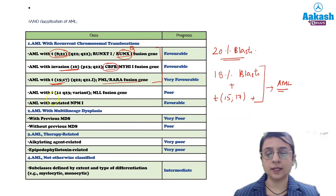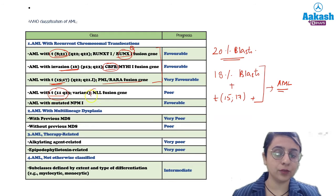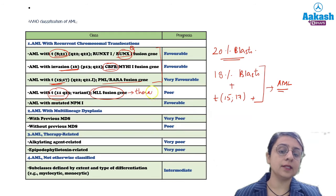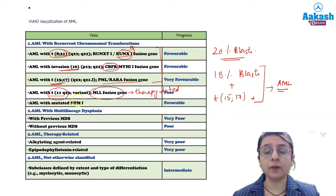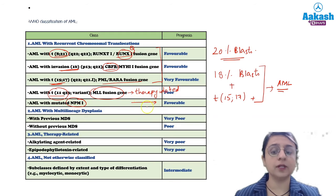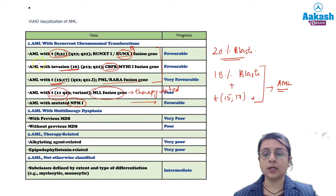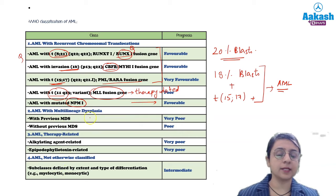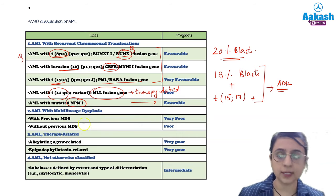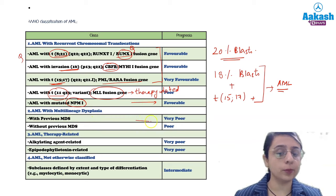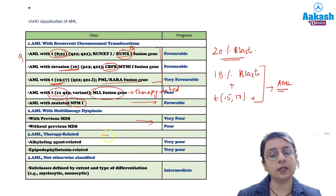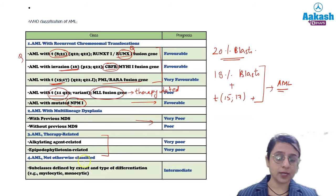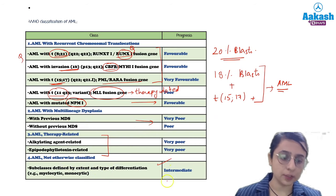The best prognosis is associated with AML with t(15;17). Translocation 11 is associated with MLL fusion gene and is the most common gene alteration associated with therapy-related AML — it has a bad prognosis. AML with mutated nucleophosmin gene is associated with favorable prognosis. AML with multilineage dysplasia carries poor prognosis; with previous MDS, more poor prognosis; therapy-related AML, very poor prognosis; not otherwise classified has intermediate prognosis.